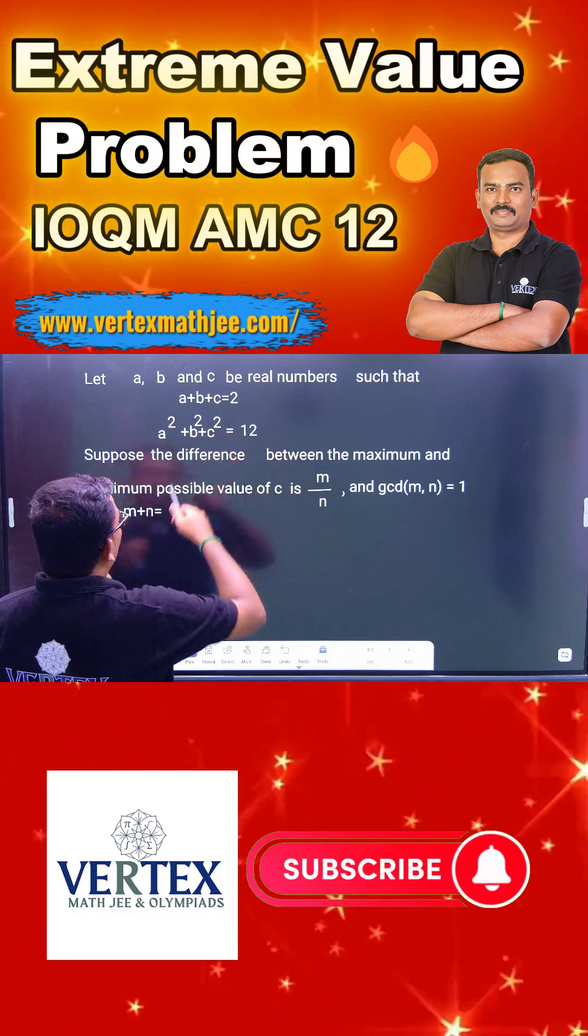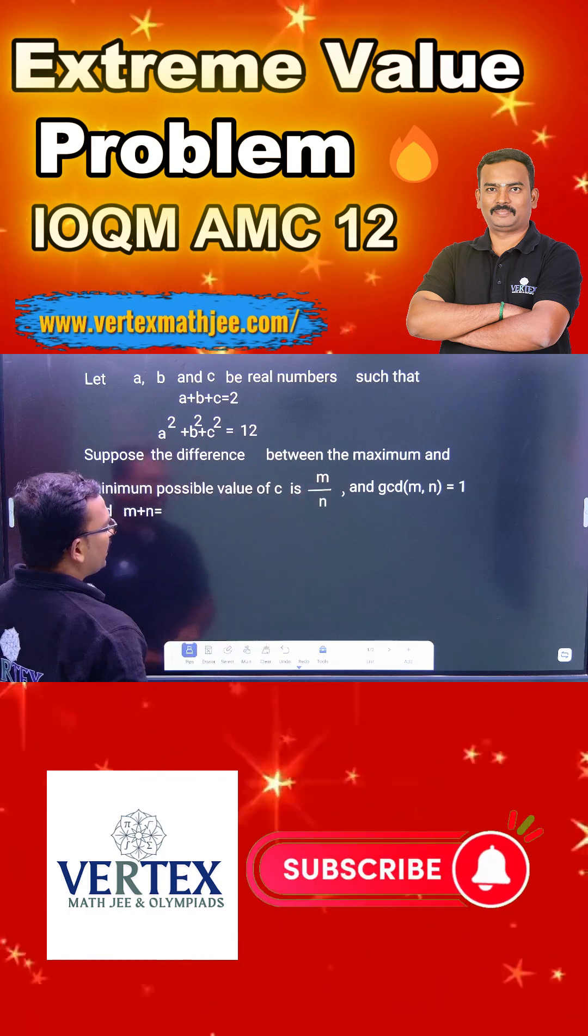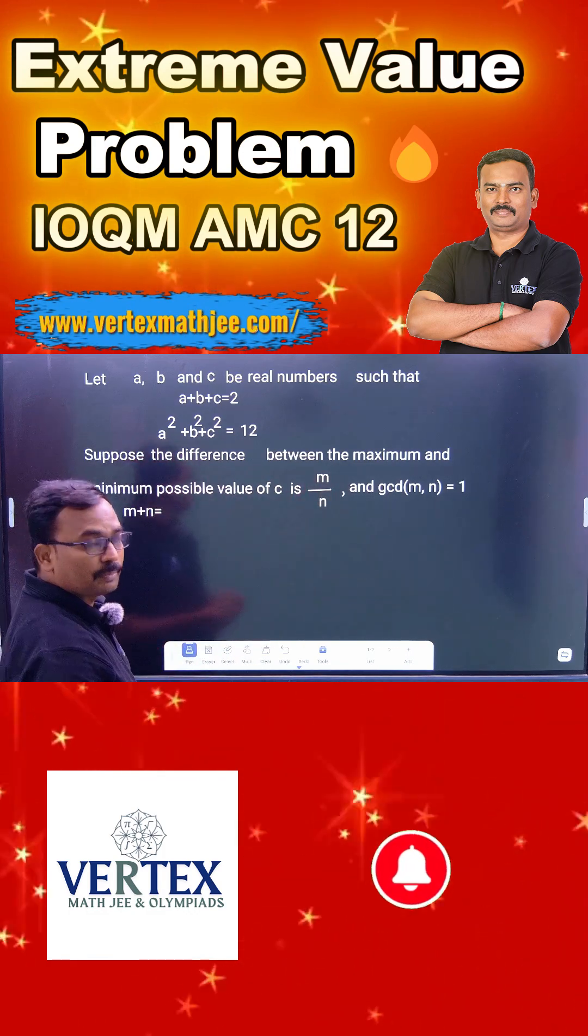You can see here a, b and c are real numbers satisfying the condition. Suppose the difference between the maximum and minimum possible values of c is m by n. We need to find m plus n.